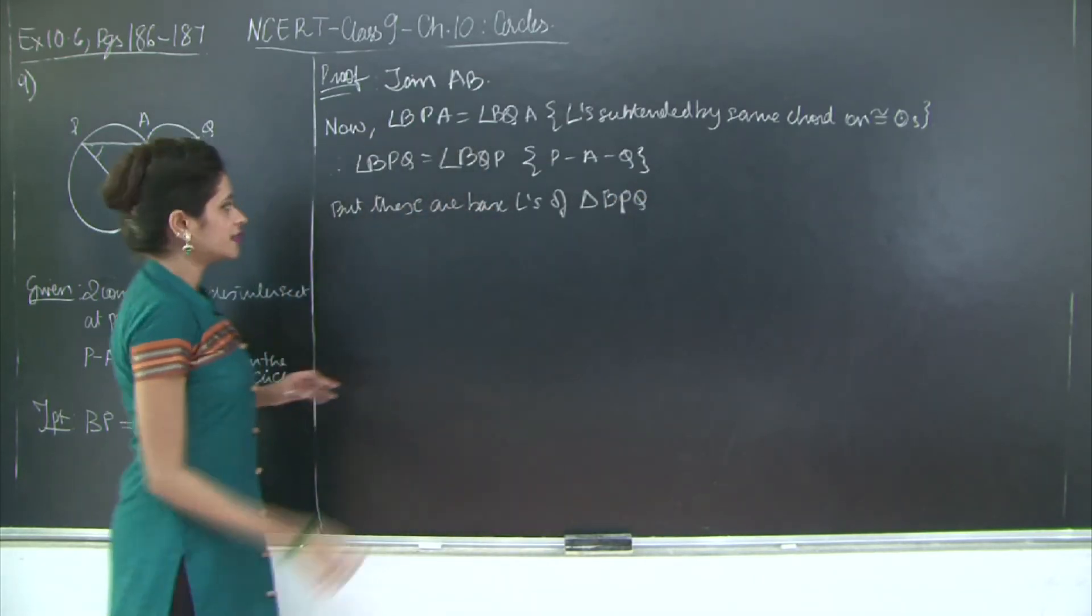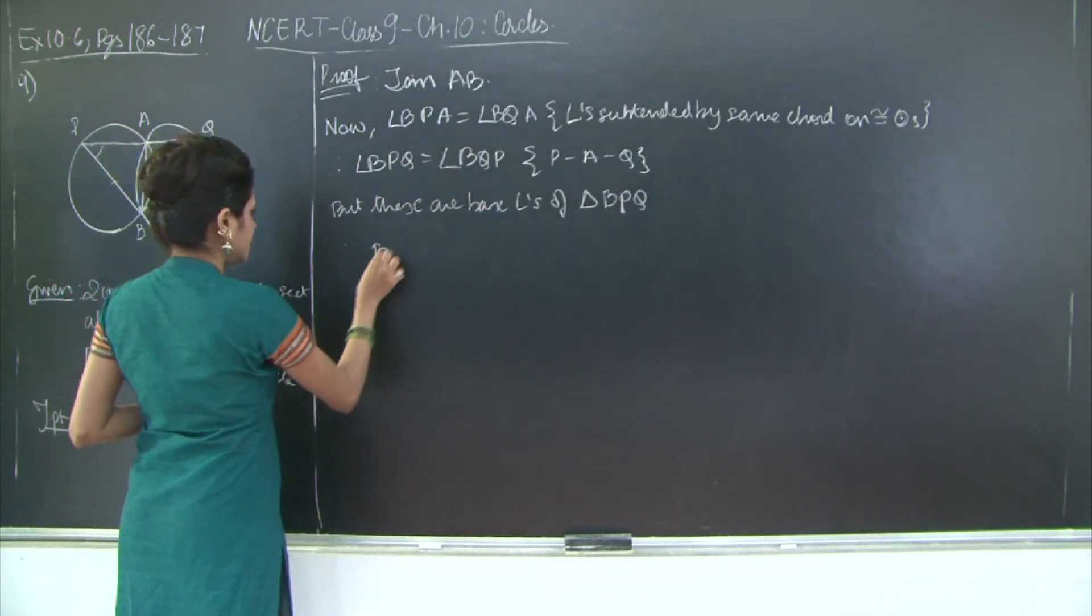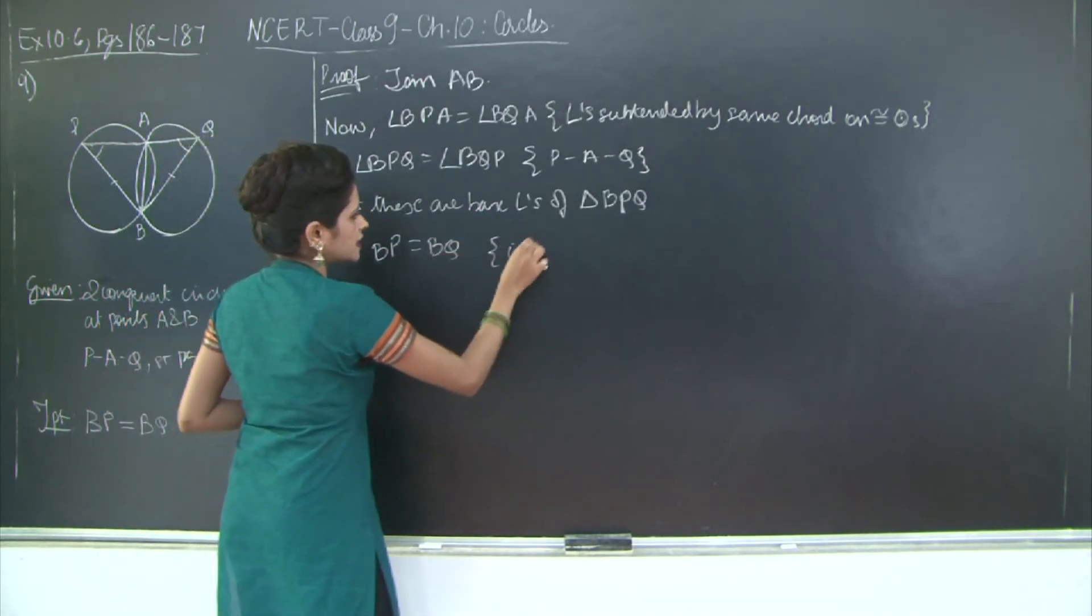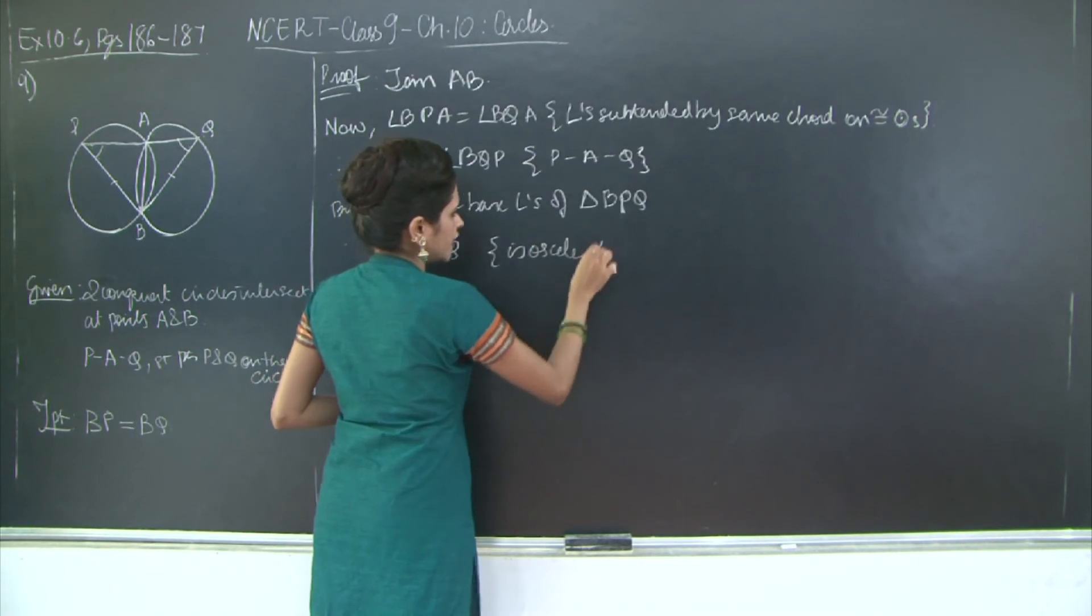Therefore BP is equal to BQ through isosceles triangle theorem.